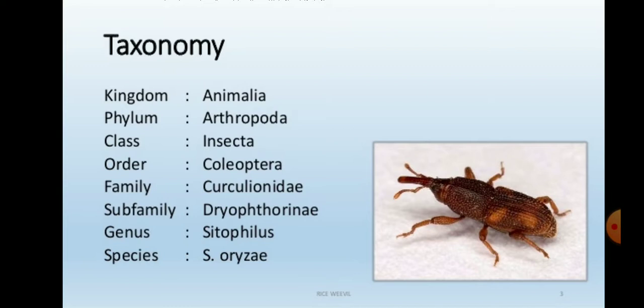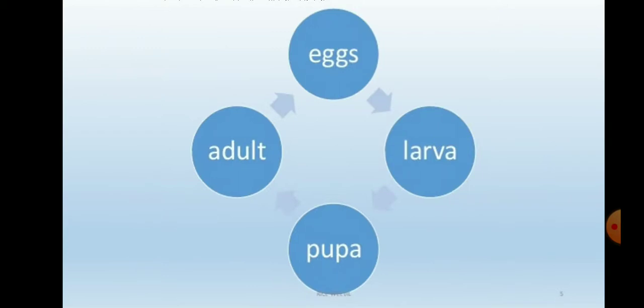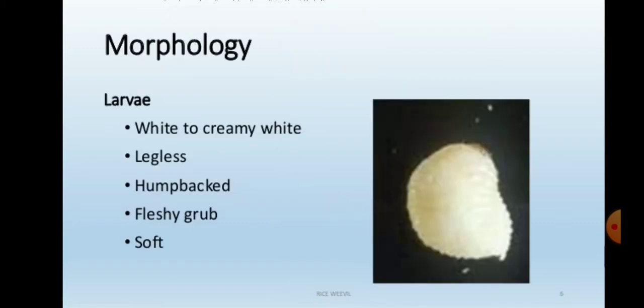The life cycle of this pest is complete in four stages, because order Coleoptera undergoes complete metamorphosis with four stages: egg stage, larval stage, pupal stage, and adult stage. First is egg, then larva, then pupa, and then adult.